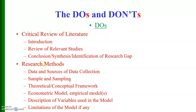After that we give research methods. In this chapter we discuss data and sources of data collection, sample and sampling procedure used for data collection. If this is cross-sectional data, we may also give a theoretical and conceptual framework of the study. This is very important — I have done one or two videos on this — and the majority of students leave this out, which they shouldn't.